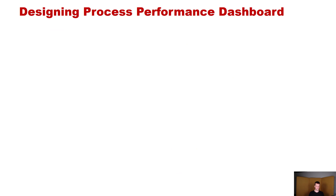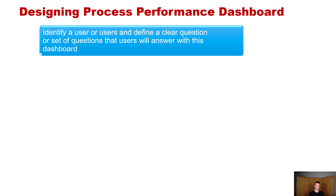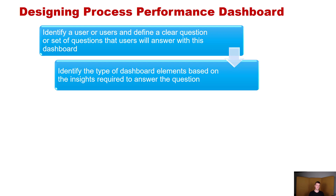Once we have some understanding of what information we want to measure about the process, we have to think about how we are going to design the process performance dashboard. There are some steps to follow. First, we need to identify the user or users and define a clear question or set of questions that the users will answer with this dashboard. Once we have this in place, we can identify the type of dashboard elements based on the insights required to answer those questions.